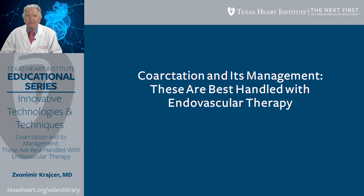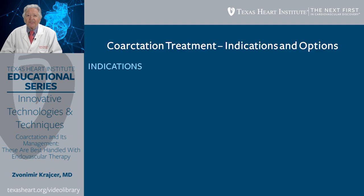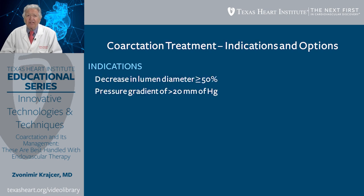These are best handled with endovascular therapy. As far as indications and options for coarctation treatment are concerned, there are particular indications necessary to consider any kind of intervention. The most important one is a decrease in luminal diameter of more than 50% at the coarctation site, and a pressure gradient across the coarctation of more than 20 mmHg.